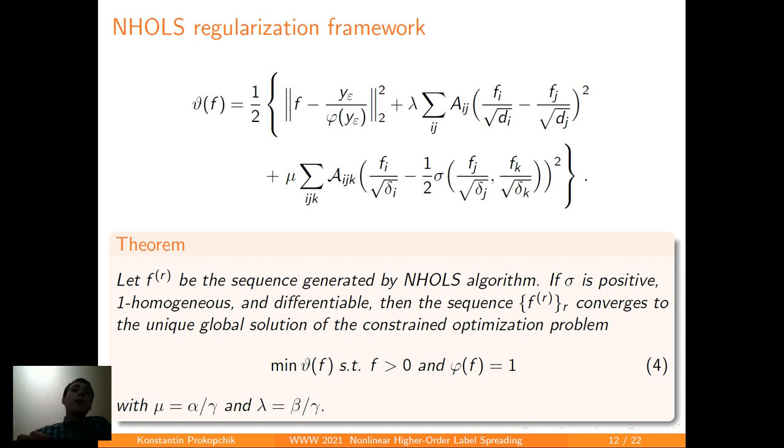Moreover, we can look at the result as an interpretable optimization framework. Let f be again the sequence generated by the algorithm. If sigma is positive, 1-homogeneous, and differentiable, then the sequence converges to the unique global solution of the constraint optimization problem that is written here. If you look at the function that we want to minimize here, and then you look at the function in the label-spreading algorithm, then you would see that the first two terms are almost identical to the ones that they have in the label-spreading algorithm, with the fact that the difference that we want to normalize y epsilon here. And we also add the nonlinear term for our minimization function.